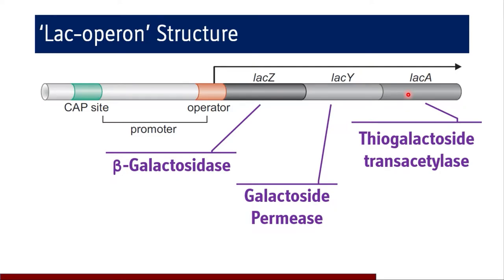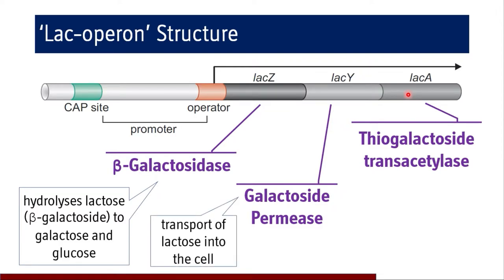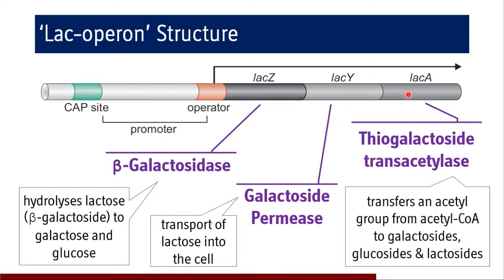The functions of these enzymes are as follows: beta-galactosidase hydrolyzes lactose (a beta-galactoside) into galactose and glucose. Galactoside permease is responsible for the transport of lactose into the cell. Thiogalactoside transacetylase transfers an acetyl group from acetyl-CoA to galactosides, glucosides, and lactosides; however, its role in the classical E. coli lac operon remains unclear — it may detoxify non-metabolizable analogs by acetylating them and preventing their re-entry into the cell.